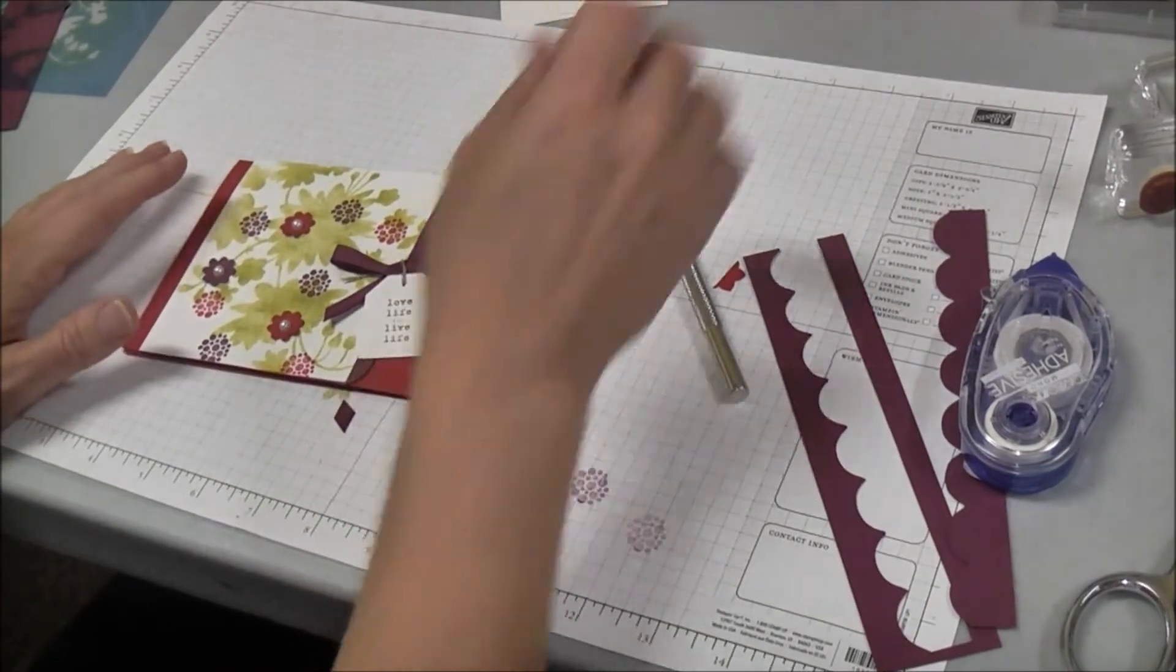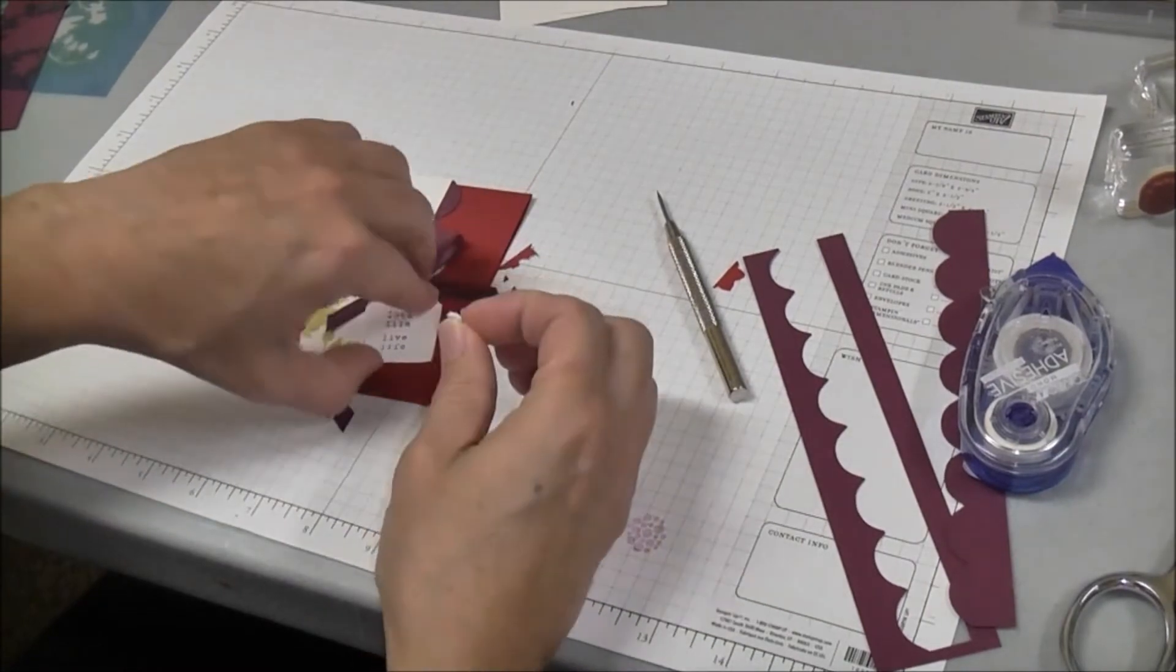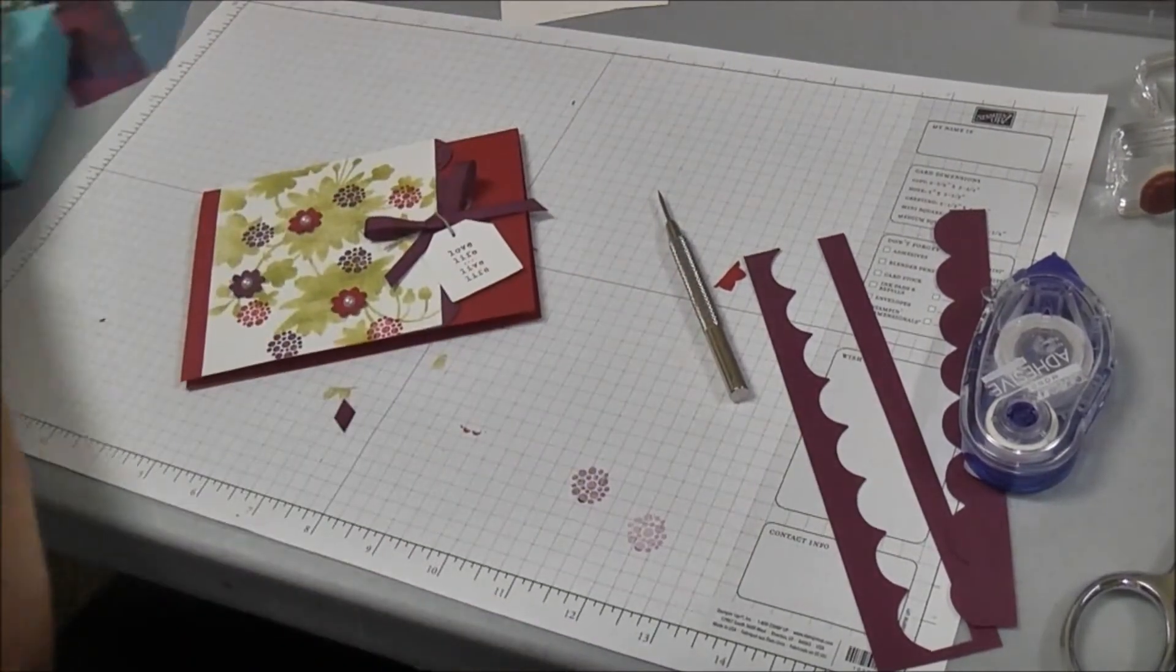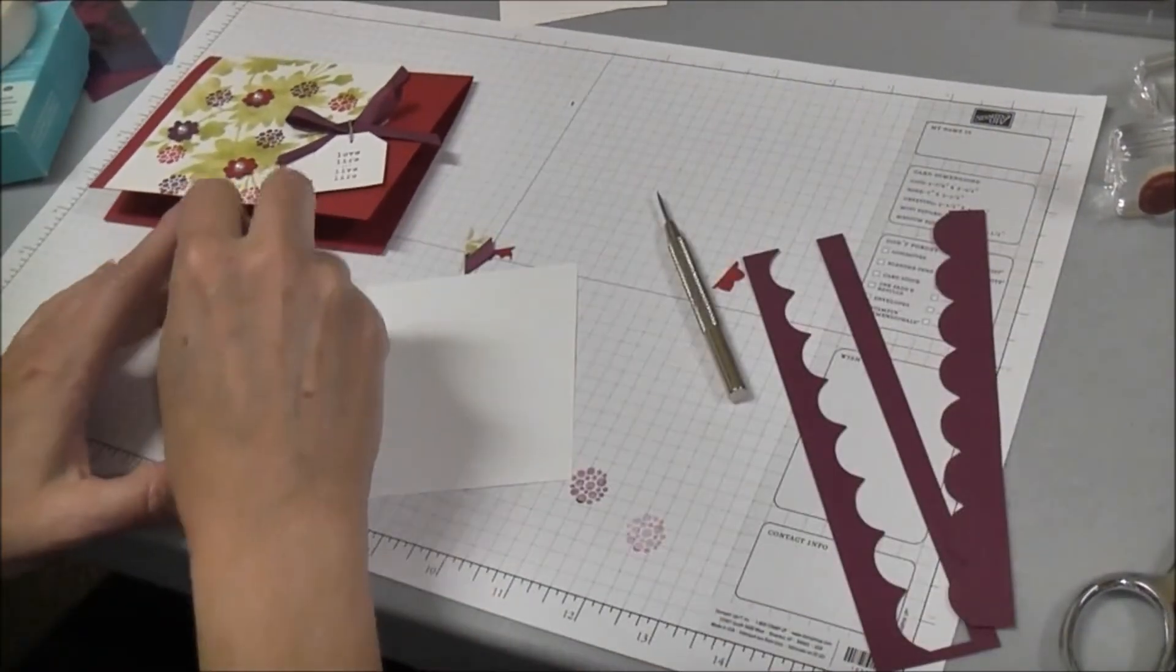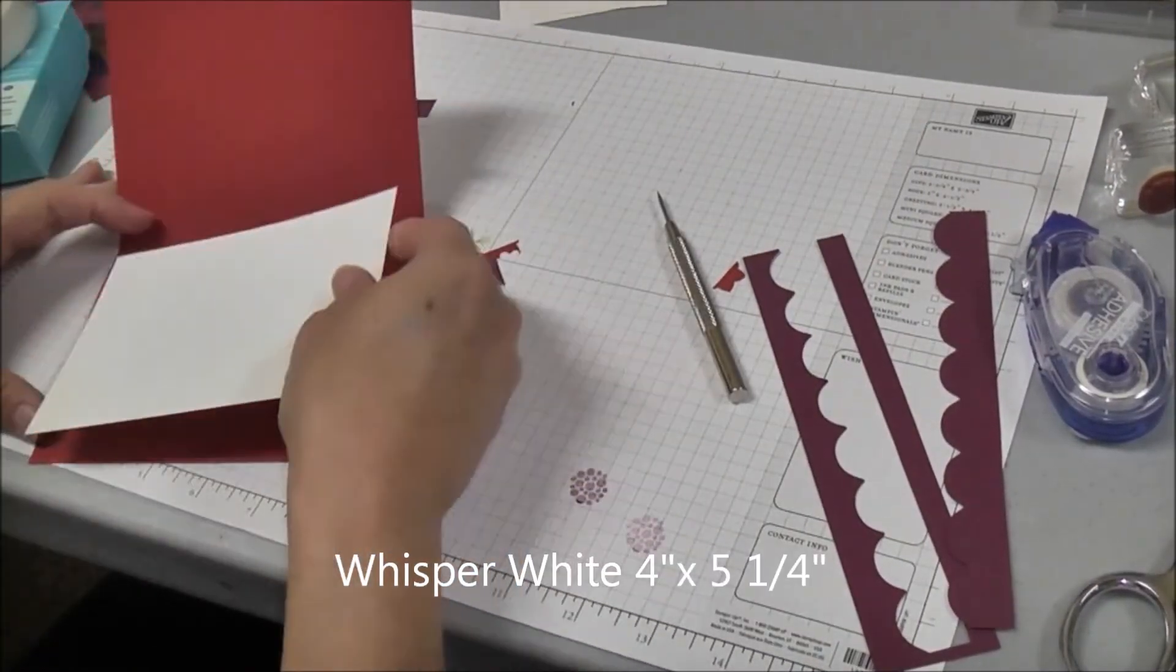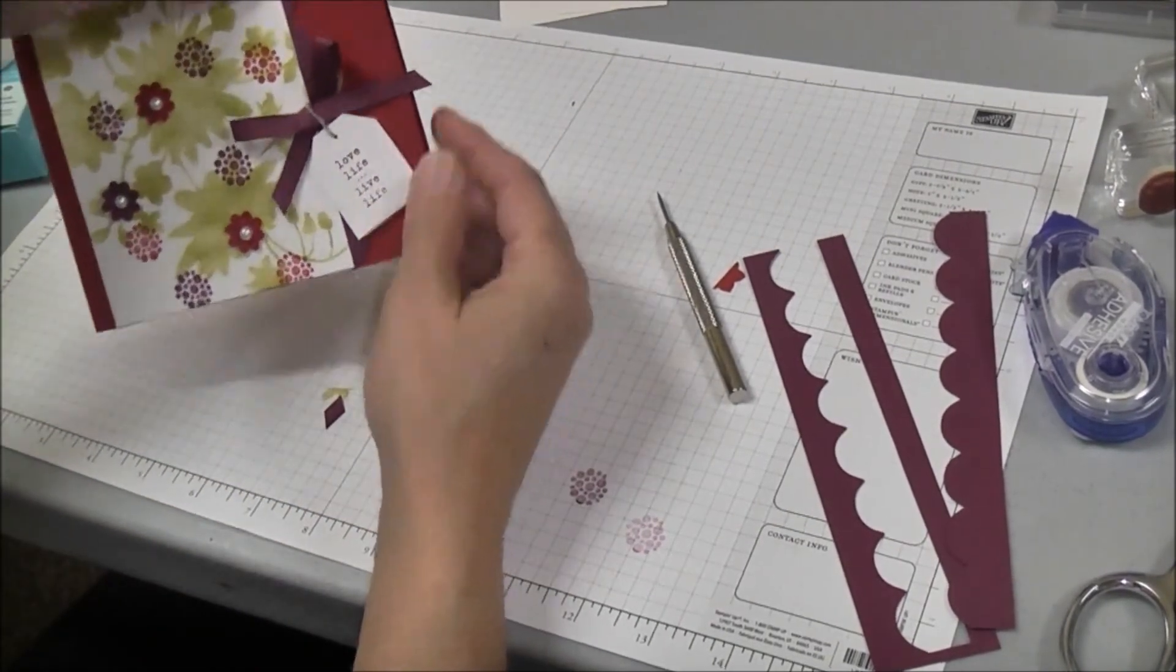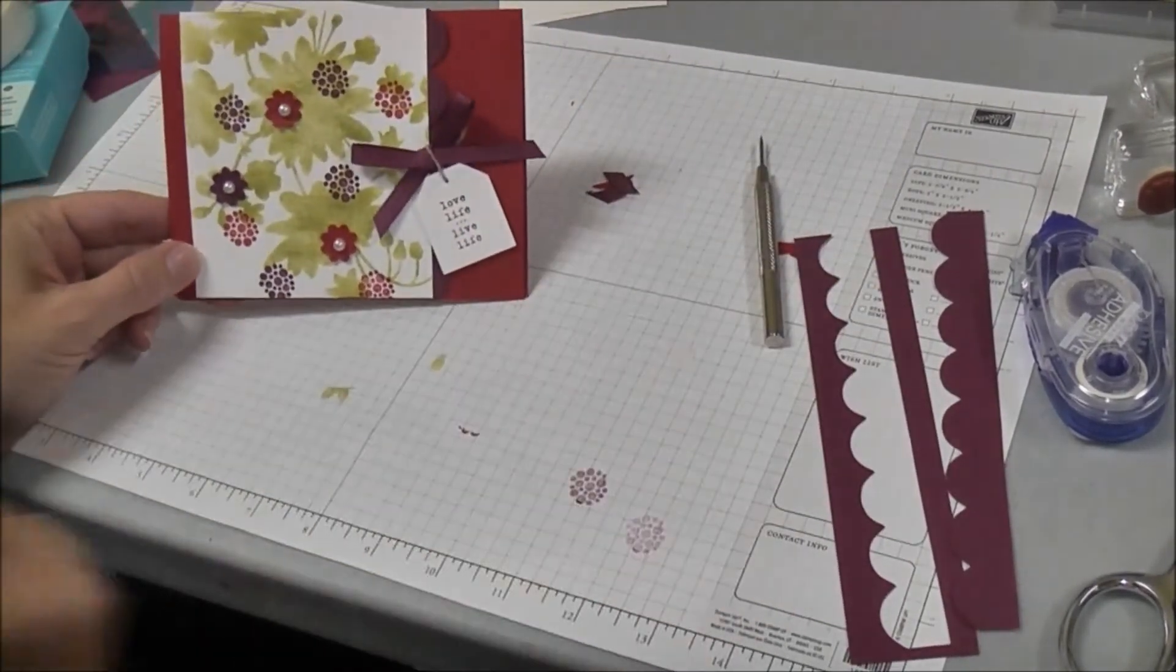Add that to the top and then the last little thing I'm going to do to it just to hold it in place is take a dimensional and put it right on the back of the tag because I don't want my tag flopping around. Because it's red on the inside and I like to write on the inside of my cards, I cut a Whisper White piece that is four by five and a quarter just to fit inside the back, and then I can write my little note or whatever I would like to have. That is how you make your Love Life card. I hope you've enjoyed the tutorial and I will see you next time, thanks.